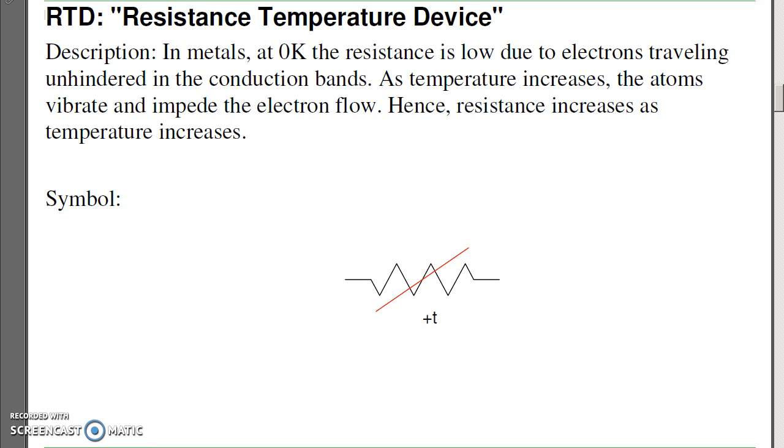The symbol for an RTD is a variable resistor with a plus T. That means the resistance goes up as temperature goes up.